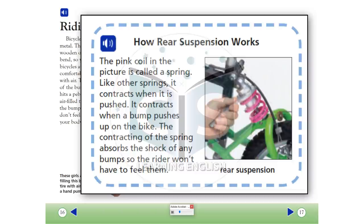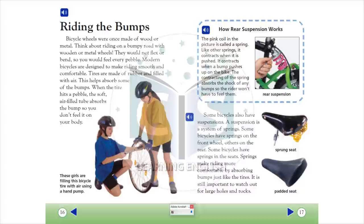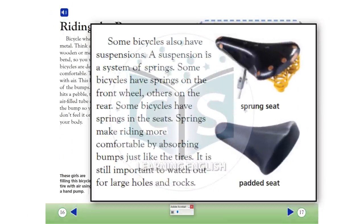The pink coil in the picture is called a spring. Like other springs, it contracts when it is pushed. It contracts when a bump pushes up on the bike. The contracting of the spring absorbs the shock of any bumps, so the rider won't have to feel them. Some bicycles also have suspensions. A suspension is a system of springs. Some bicycles have springs on the front wheel, others on the rear. Some bicycles have springs in the seats. Springs make riding more comfortable by absorbing bumps, just like the tires. It is still important to watch out for large holes and rocks.